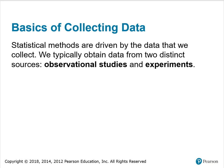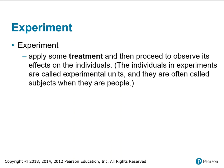The basics of collecting data. Statistical methods are driven by the data that we collect. We typically obtain data from two distinct sources: observational studies and experiments. In an experiment, we apply some treatment and then proceed to observe its effects on the individuals. The individuals in experiments are called experimental units, and they are often called subjects when they are people.